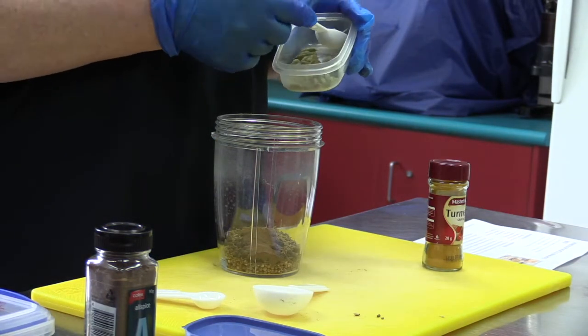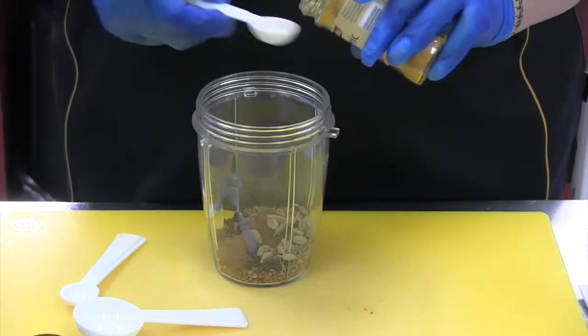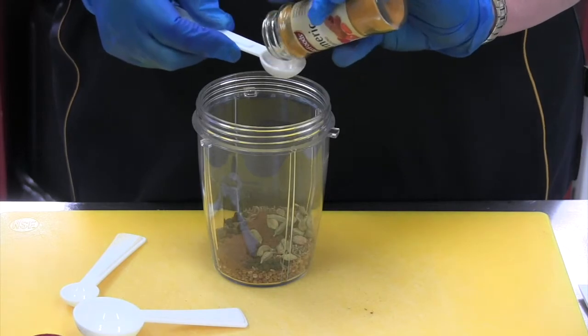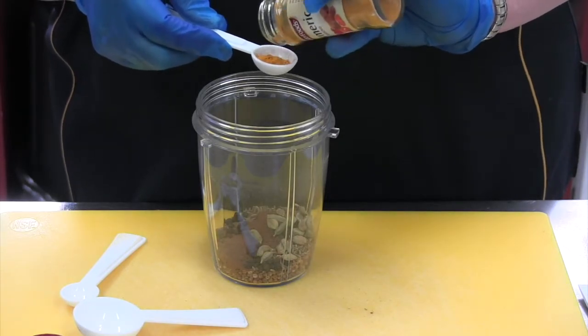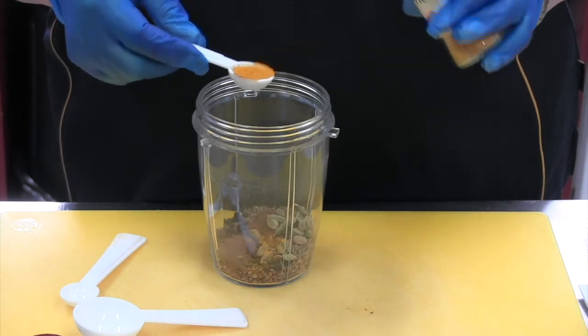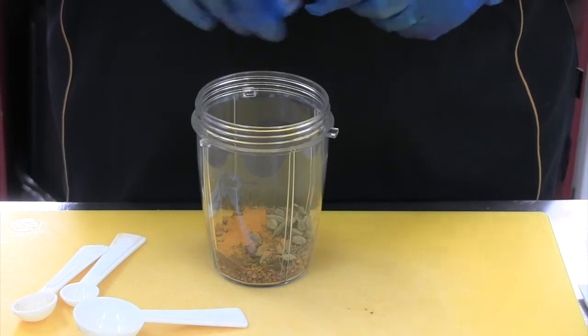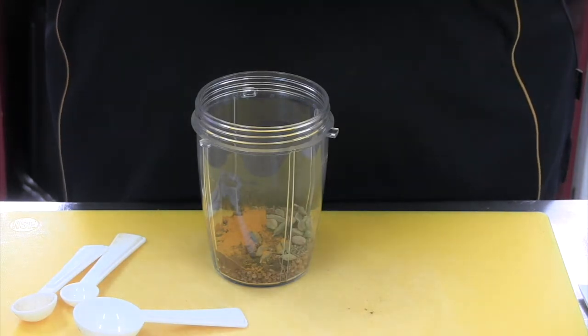We need one teaspoon of cardamom, and turmeric. The health values of turmeric are huge - very popular at the moment. The recipe calls for half a teaspoon, but we're doing double, so we're using one teaspoon. Wouldn't want to have the shakes doing this, would you?